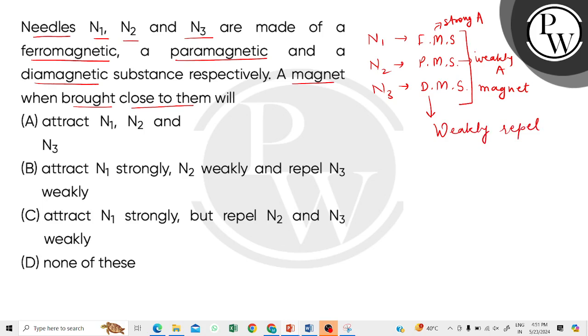When we match these three properties, we can say that N1 will be strongly attracted, N2 will be weakly attracted, N3 will be weakly repelled. So according to this, children, the correct answer is option B. Thank you.